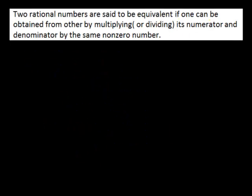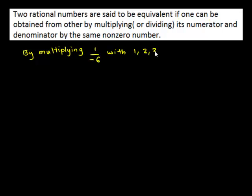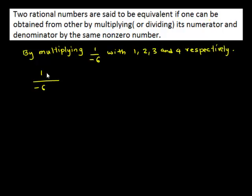So we have obtained 4 terms of this pattern by multiplying 1 upon negative 6 by 1, 2, 3, and 4 respectively. In this problem we have to find the next 4 terms. Therefore, the fifth term can be obtained when 1 upon negative 6 is multiplied by 5 in the numerator and in the denominator.